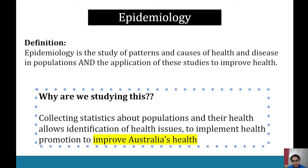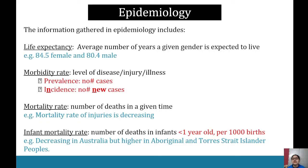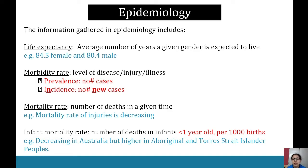The information gathered in epidemiology includes, firstly, life expectancy — the average number of years a given gender is expected to live. We look at it as a comparison between genders. Right now it's 84.5 years for females and 80.4 years for males. Remember it's an average.